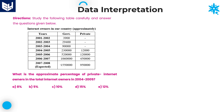Next question: what is the approximate percentage of private internet owners in the total internet owners in 2004 to 2005? As we are talking about 2004 to 2005, private internet owners are 12,000. This 12,000 is what percentage of total? The total means the summation of government and private: 2,30,000 plus 12,000 equals 2,42,000. We need to calculate the approximate percentage.